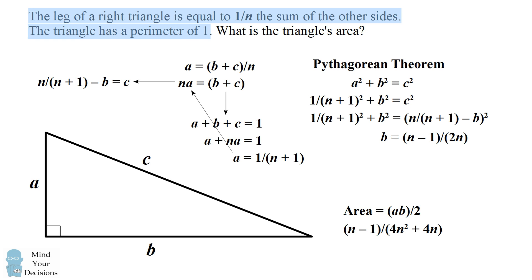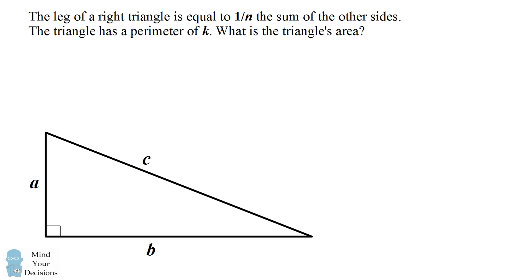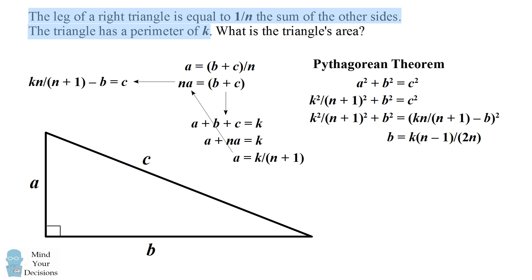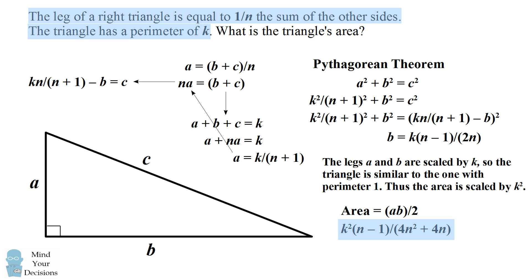Now what happens if the triangle has a different perimeter k? Are the triangles similar? Will the sides and area scale appropriately? Going through the same steps with perimeter k, side A equals k divided by (n plus 1) — already scaled by k compared to the perimeter-1 case. Side B also scales by k. Since both legs scale by k, the area scales by k squared, confirming the triangle with perimeter k is similar to the one with perimeter 1. This proves the result generally for the condition that one leg equals 1/n the sum of the other sides and any arbitrary perimeter k.